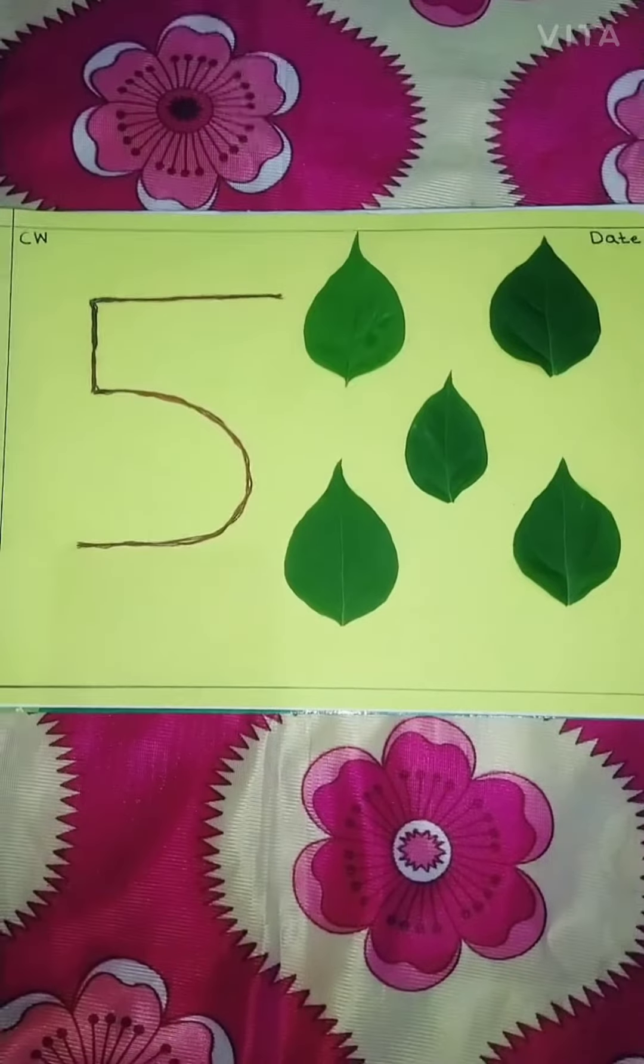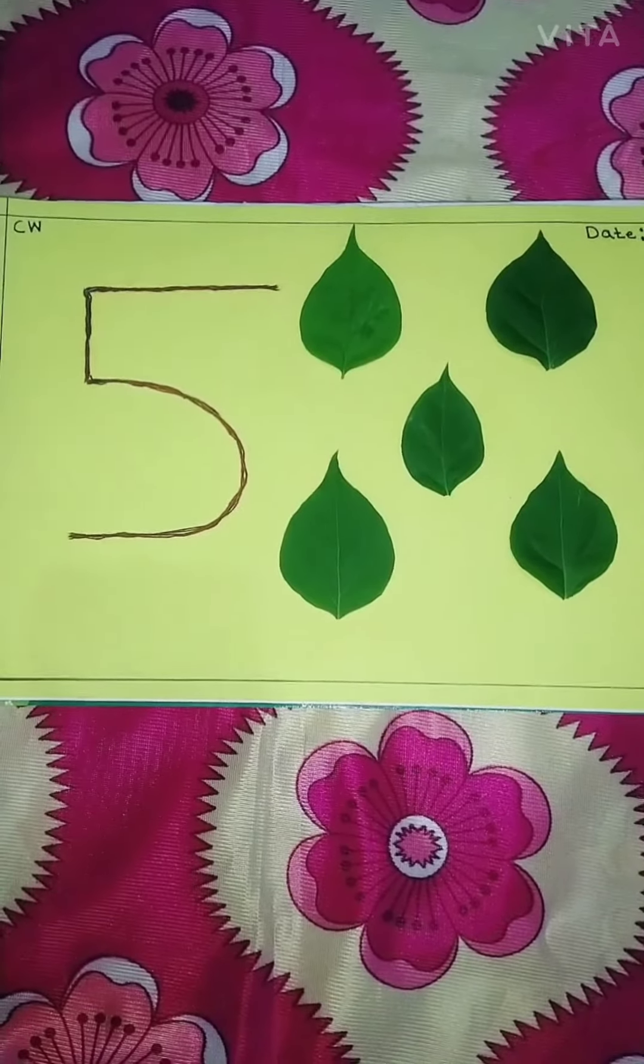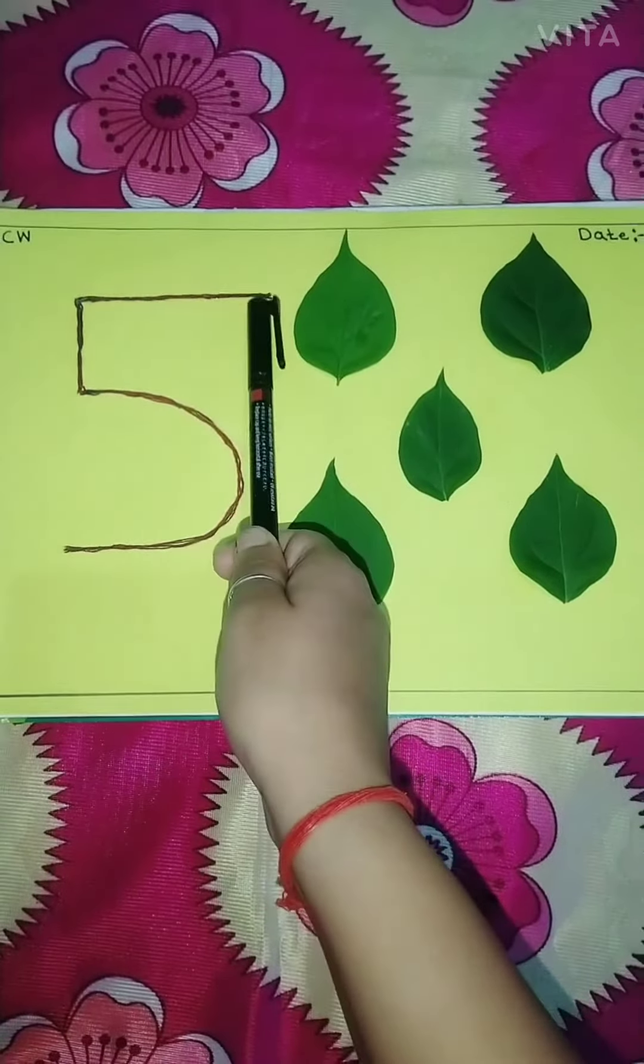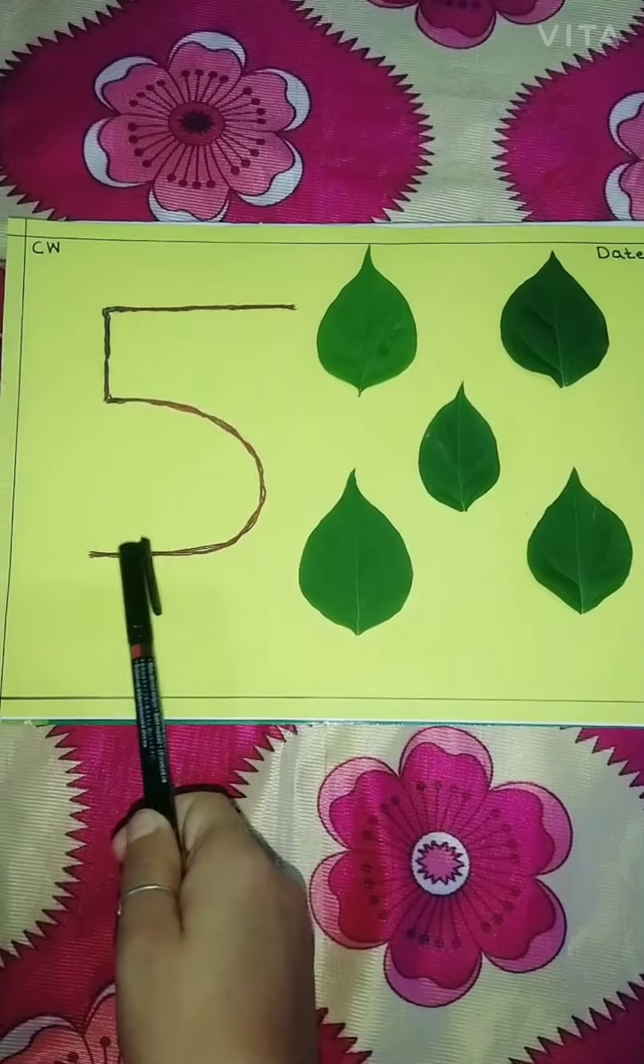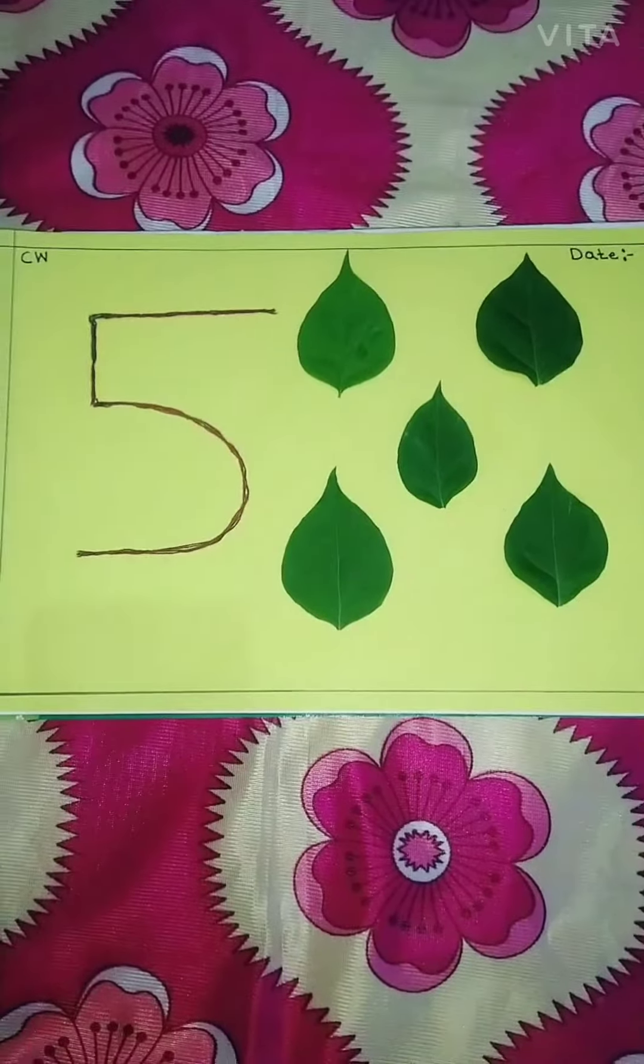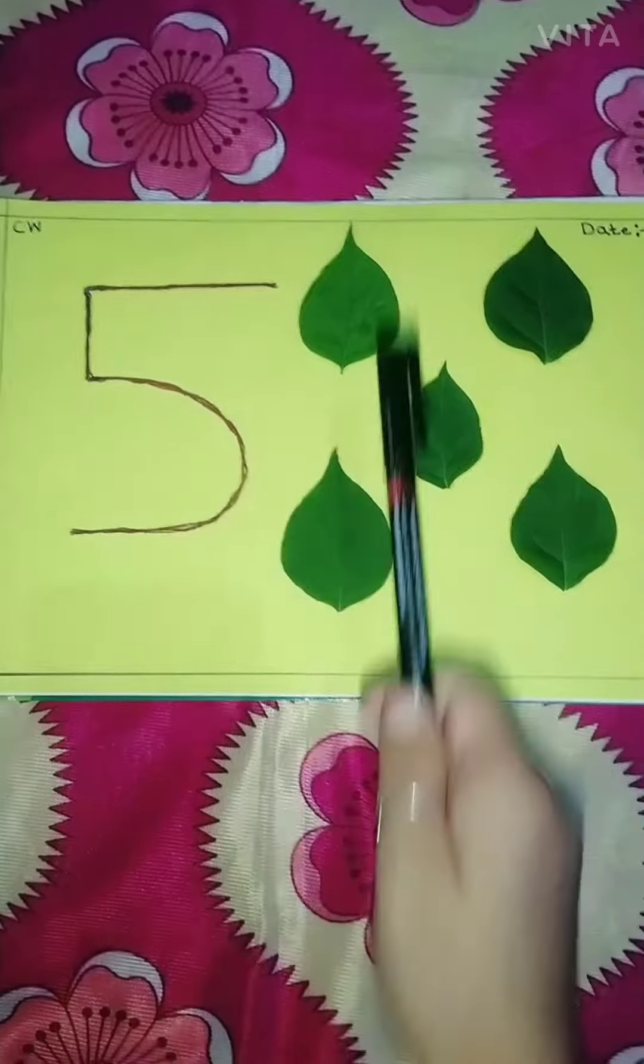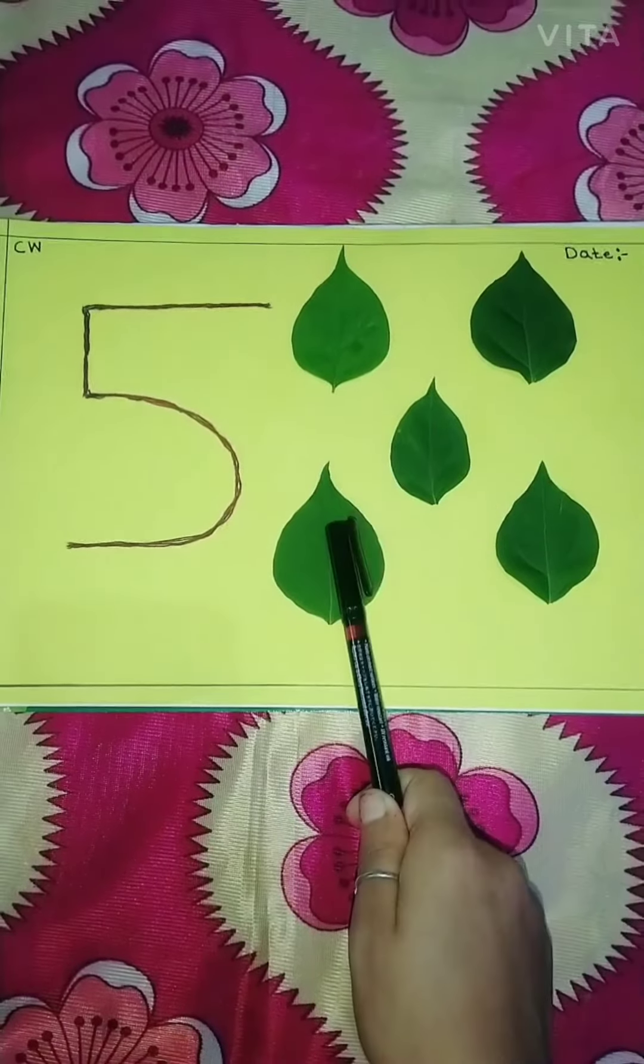So children, abhi hum jaldi se eek bar aur revise kar lete hai ki aaj hap ne kya kiya. Okay? Sleeping line, standing line, curved line makes 5. Okay? And how many leaves are there? 1, 2, 3, 4, 5.